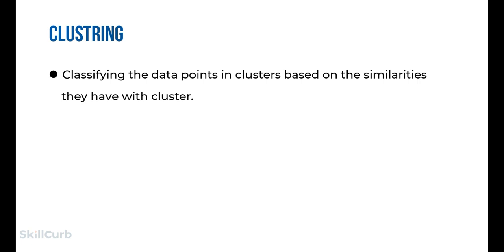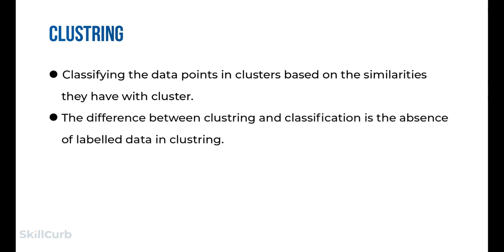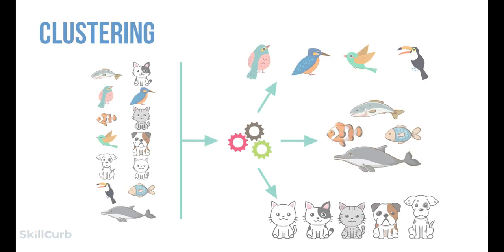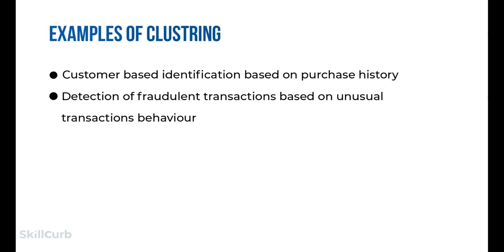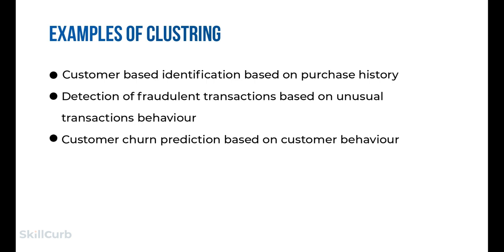The most famous type of unsupervised learning is clustering. Clustering groups data based on similarities among data points — not based on labels. The clustering algorithm finds similar patterns within data points. For example, images can be clustered into birds, fish, and mammals. Examples of clustering include: grouping customers based on purchasing behavior, detection of fraudulent transactions based on unusual transactional behavior, and customer churn prediction based on customer behavior.